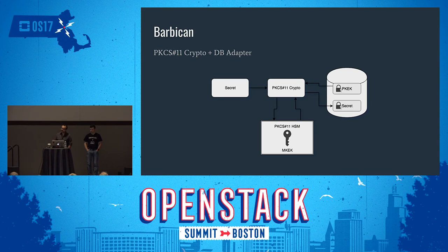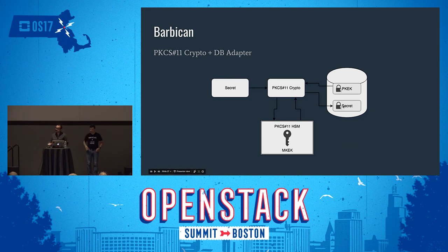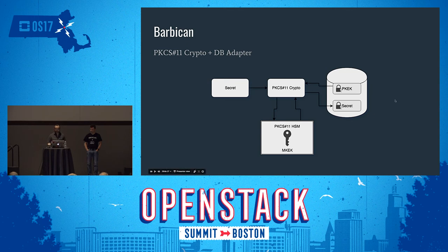A better security option is using an HSM. When Barbican is configured with a PKCS#11 HSM, the HSM holds and generates the master key in a non-extractable manner. The PKCS#11 crypto plugin retrieves an encrypted project key — one key per project encrypted with the master key — loads it to the HSM, decrypts it in memory, and then uses that project key to encrypt all project secrets. The project keys never leave the HSM in an unencrypted manner, providing strong security guarantees.